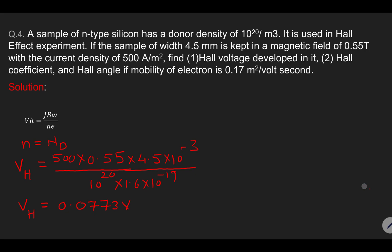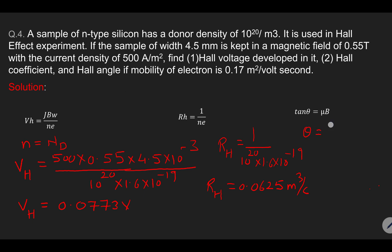Next we calculate the Hall coefficient, which is 1 upon N times E. The donor density is 10 to the 20 and charge on each electron is 1.6 into 10 to the minus 19, giving a Hall coefficient of 0.0625 meter cube per coulomb. Third, we calculate the Hall angle using theta equals tan inverse of mobility into magnetic field B, which comes out to be 5.31 degrees.